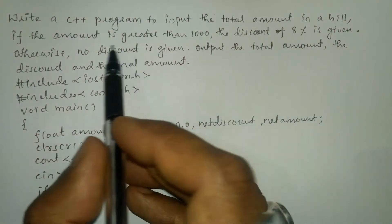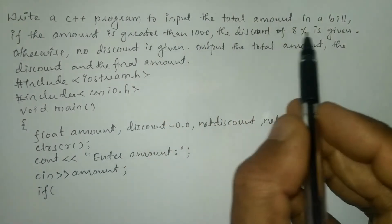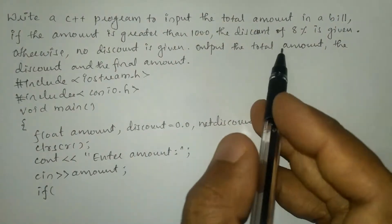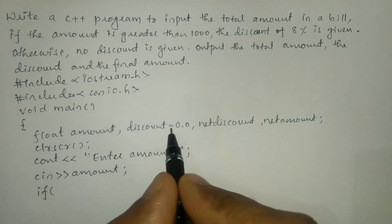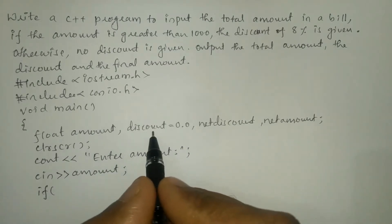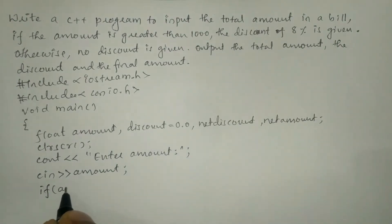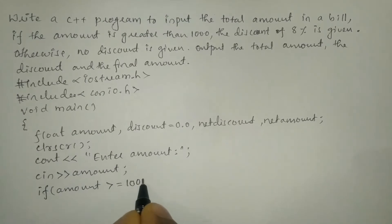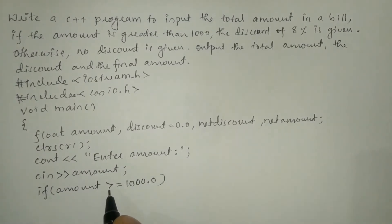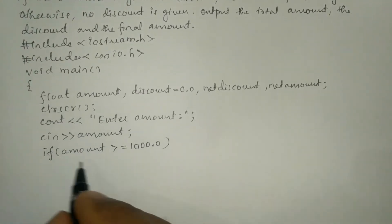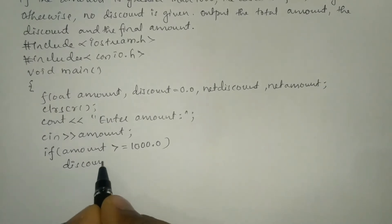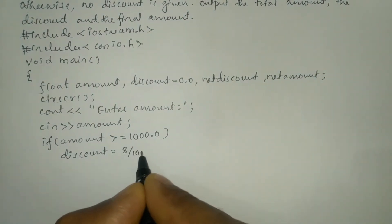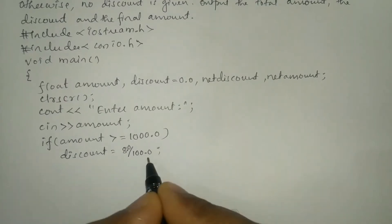In the question they have given: if the amount is greater than 1000 then an 8% discount has to be given; if the amount is not greater than 1000 then no discount — zero discount. So if the entered amount is greater than or equal to 1000.0 (because it is a floating point number), we use the discount variable. Discount is equal to 8.0 / 100.0, and then put a semicolon.